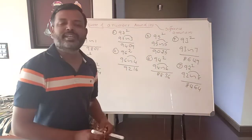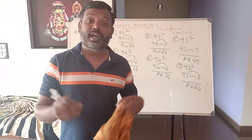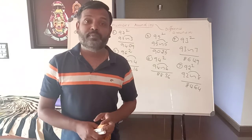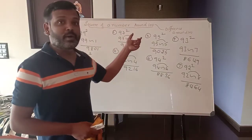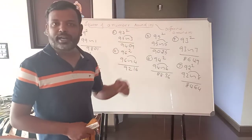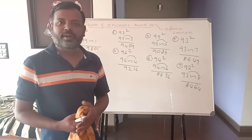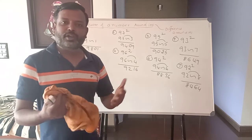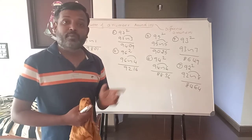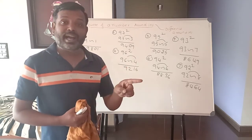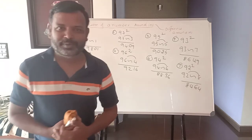So this is how we find out the square of a number around 100, very close to 100. In the next video, we are going to find out the square of a number between 100 and 110. Thank you.